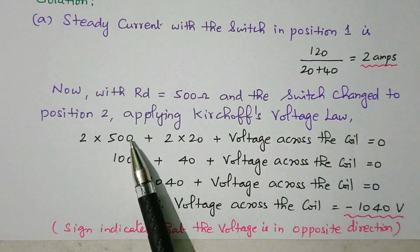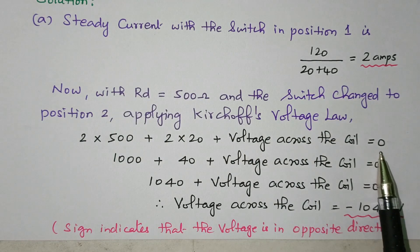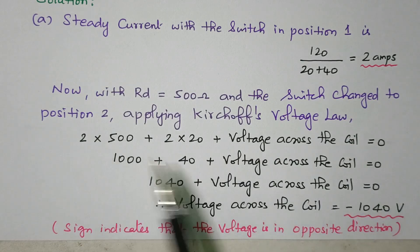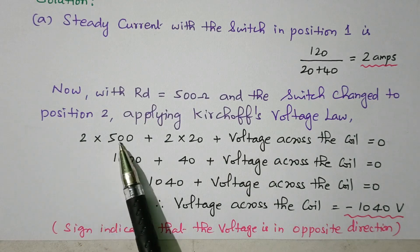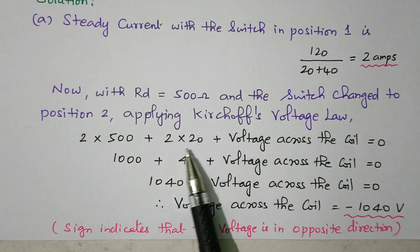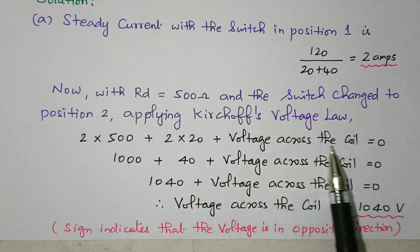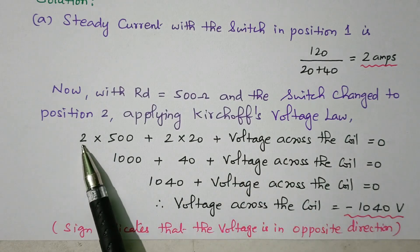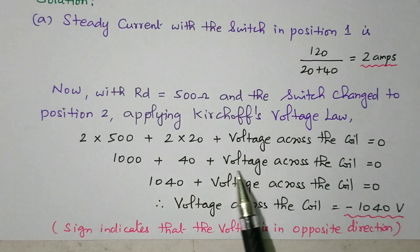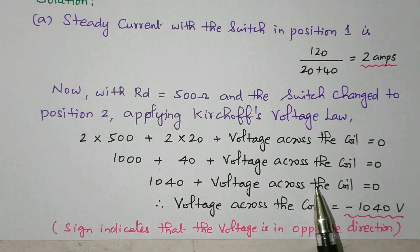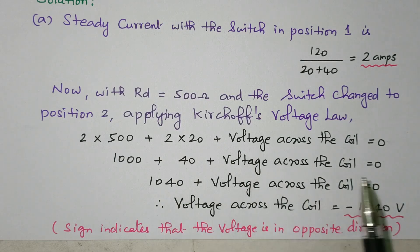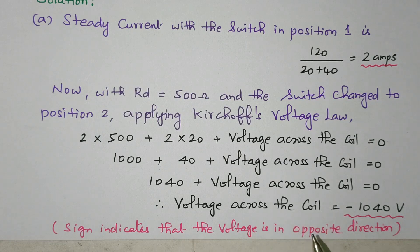The switch is changed to position 2. Voltage rise equals voltage drop; voltage rise is 0. So: 2 into 500 (voltage across RD) plus 2 into 20 (voltage across 20 ohm resistor) plus voltage across the coil equals 0. That gives 1000 plus 40 plus voltage across the coil equals 0, so 1040 plus voltage across the coil equals 0. Bringing 1040 to the other side, voltage across the coil equals minus 1040 volts. The negative sign indicates the voltage is in the opposite direction. So the first subdivision answer is: voltage across the coil is minus 1040 volts.